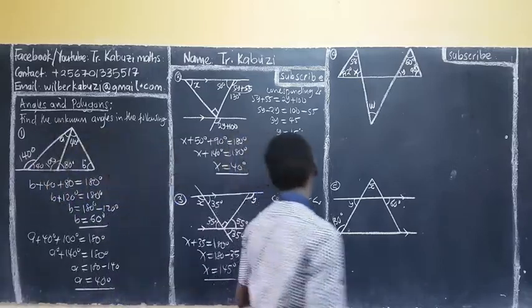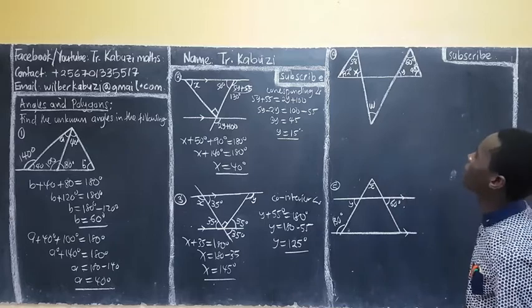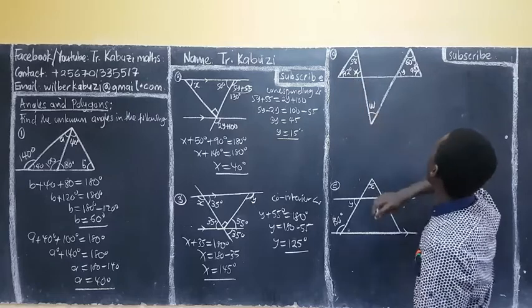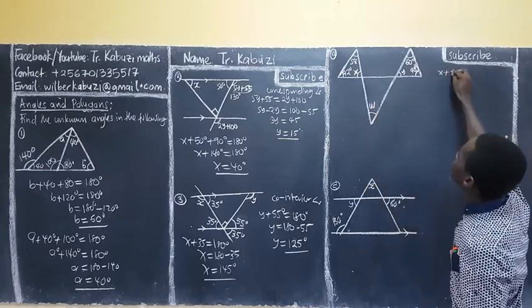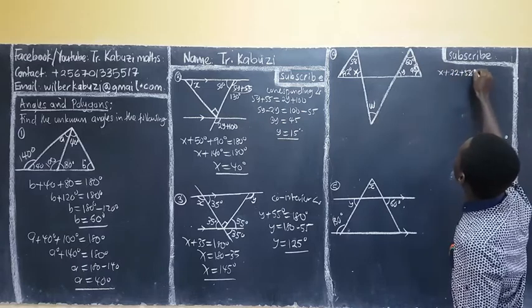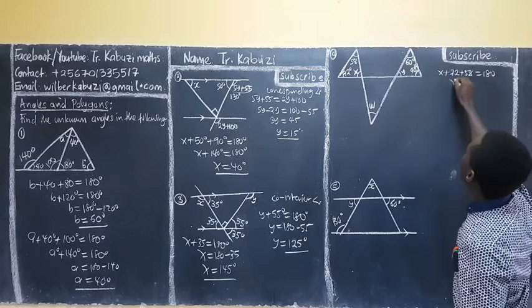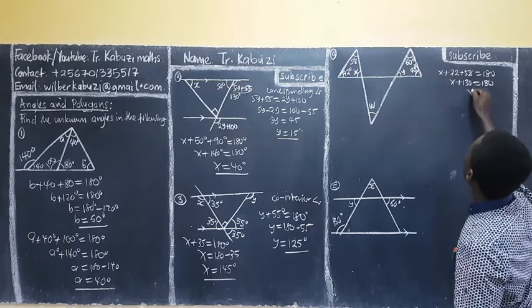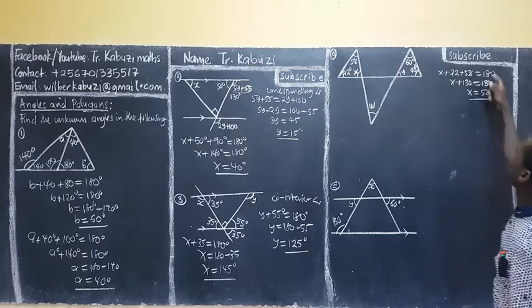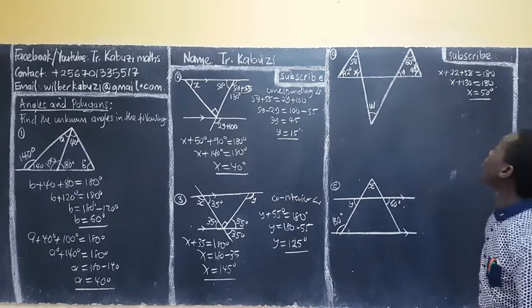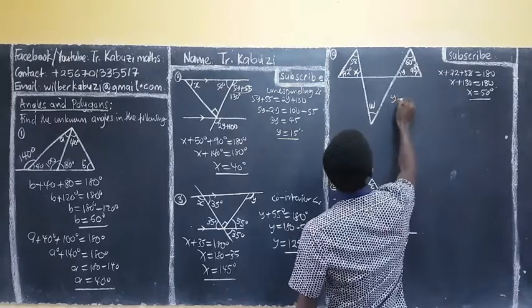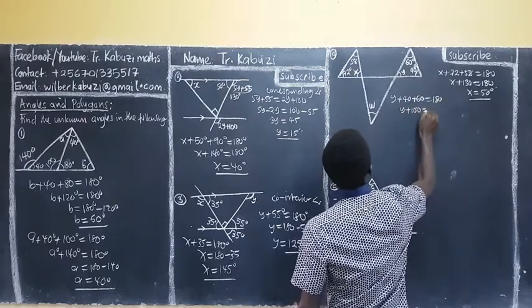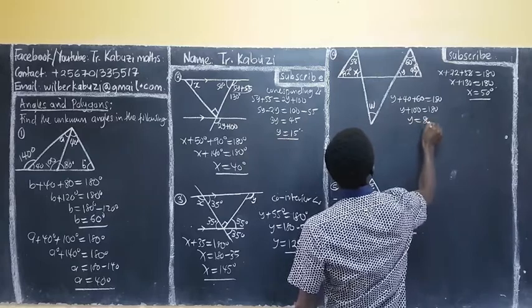Now, here I want to get W and Y. Start from here — my X: X plus 72 plus 58 equals 180. So, X plus 130 equals 180. Take it aside — your X is going to be 50 degrees. After getting X, come and get Y also. My Y plus 40 plus 60 is 180. So, Y plus 100 is equal to 180. So, your Y is going to be 80 degrees.